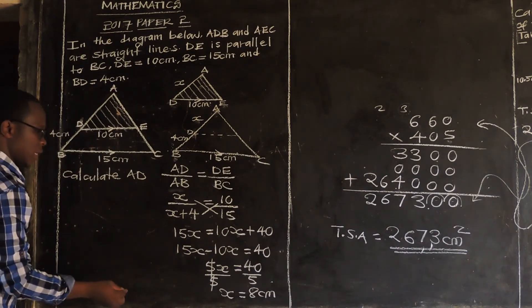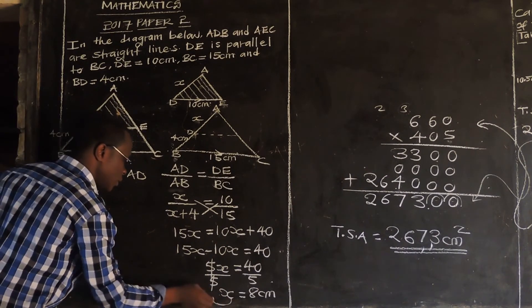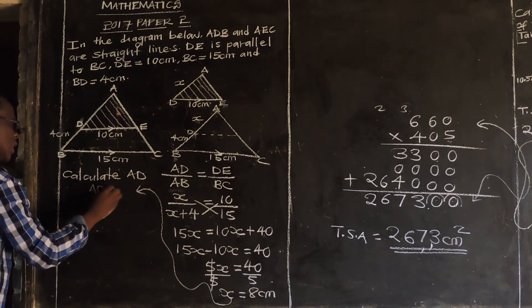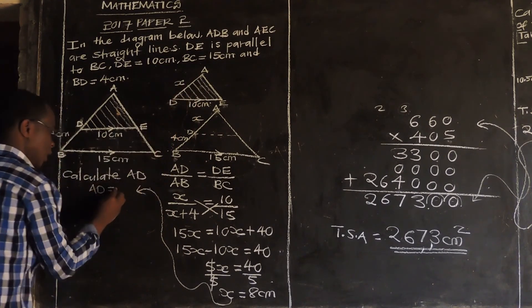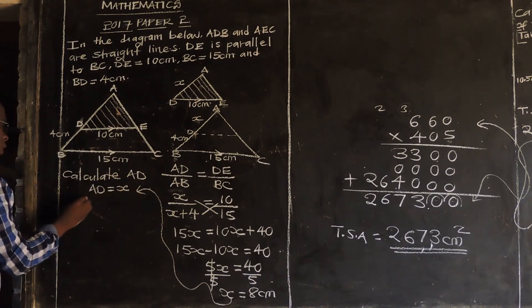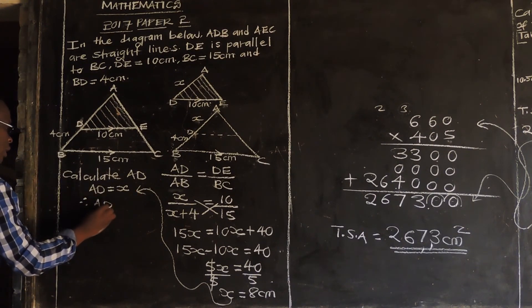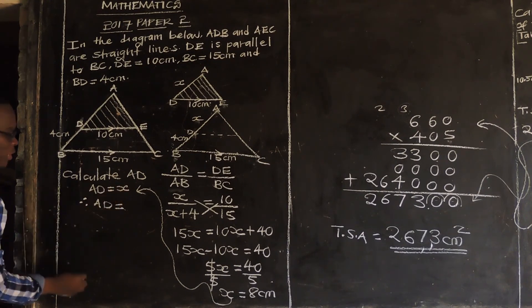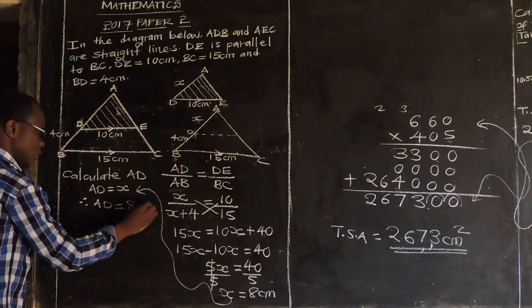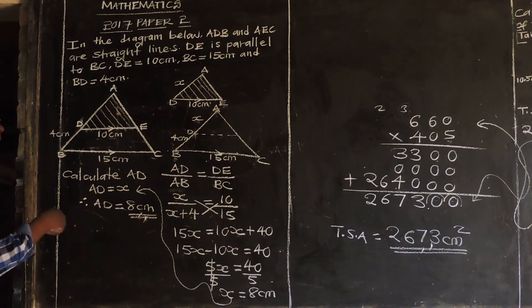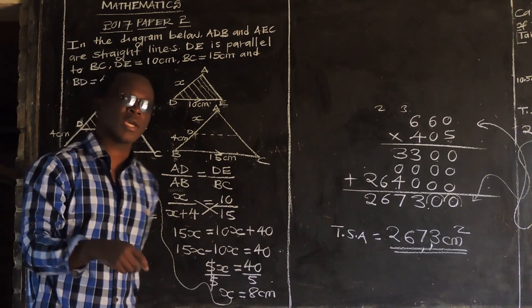Then we say since we know that our AD we just write from this side, AD. Where there is AD there is X. This is our X. AD is equal to X. So we say therefore since we know the value of X which is just the AD is equal to what? What is our X? 8 centimeters. So this is the way you answer and our AD is 8 centimeters.